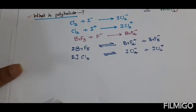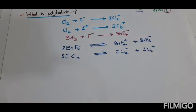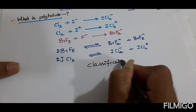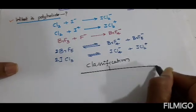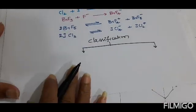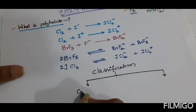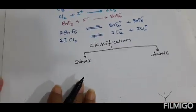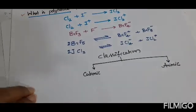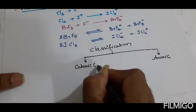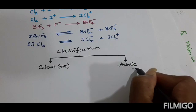Now let's see the classification of polyhalides. Based on the type of charge carried, polyhalides are classified as cationic — meaning positively charged polyhalides — and anionic — meaning negatively charged polyhalides. Further, based on atomicity, they are classified into triatomic, pentatomic, and heptatomic.